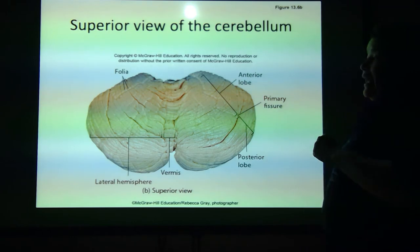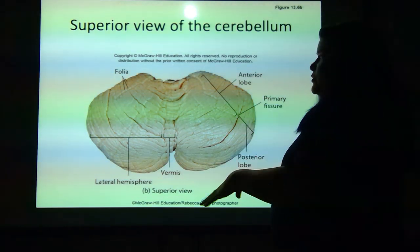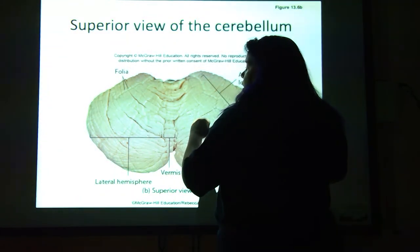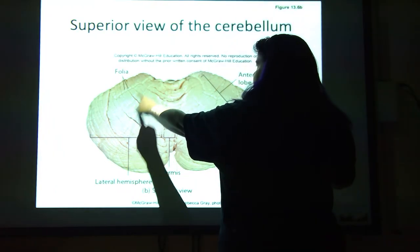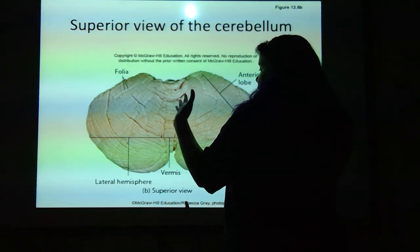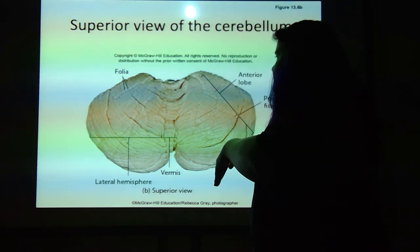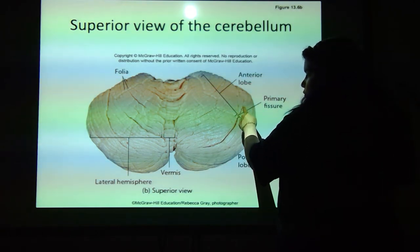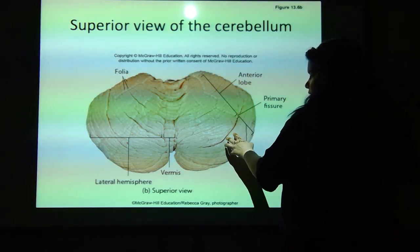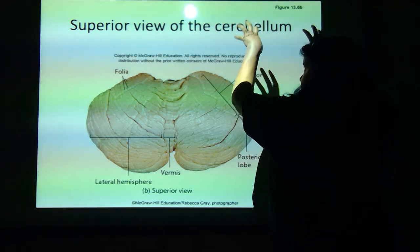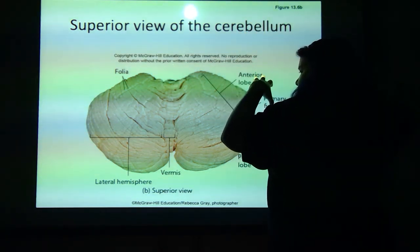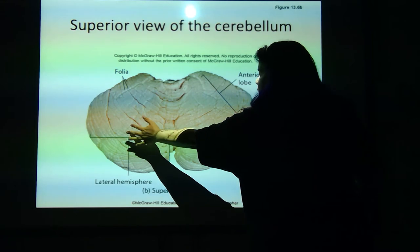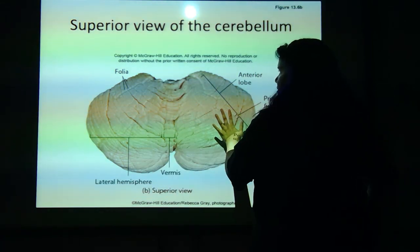Looking at it from the top — remember lateral hemispheres — this is the whole cerebellum and you can see a left and a right. The folia are the folds you're seeing. You've got the anterior lobe toward the front of the body and the posterior lobe toward the back. The vermis right here is actually the connecting point between the two lateral hemispheres.